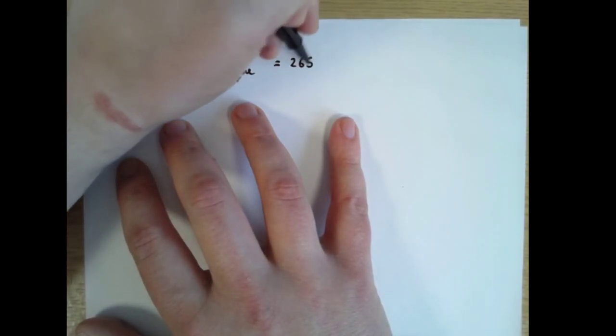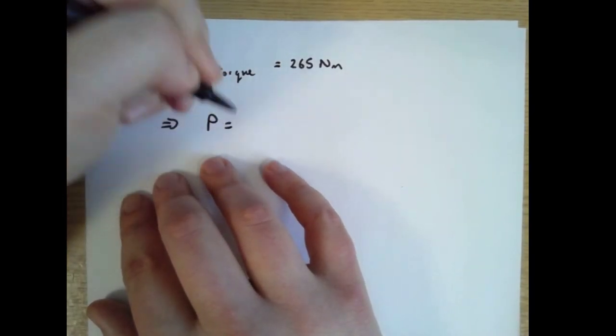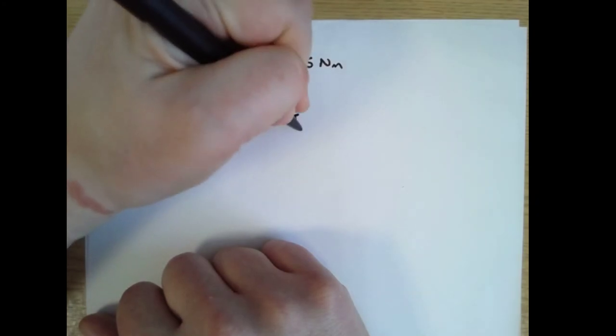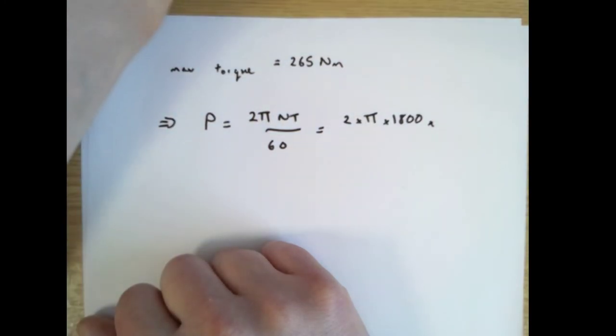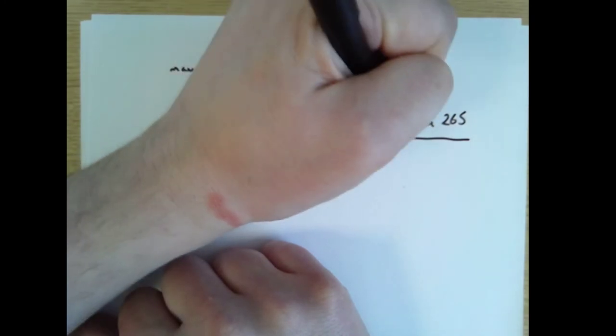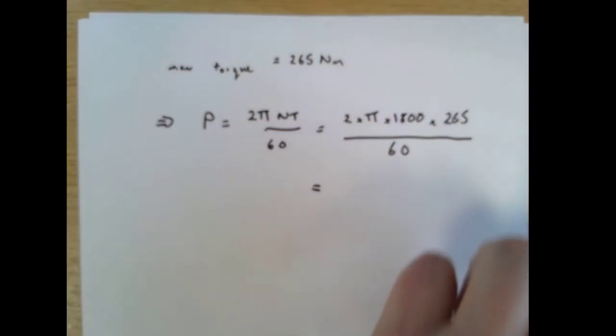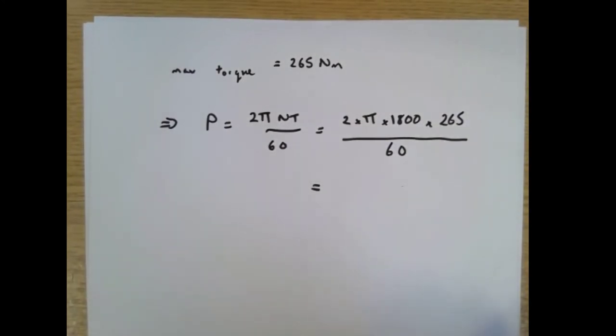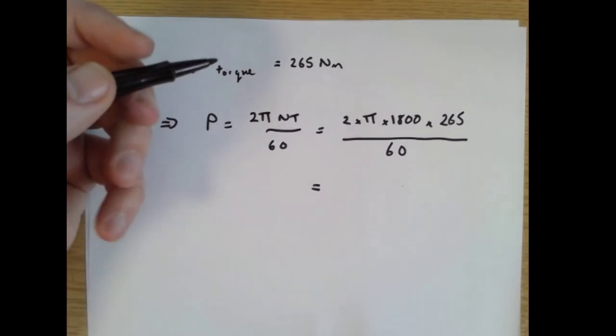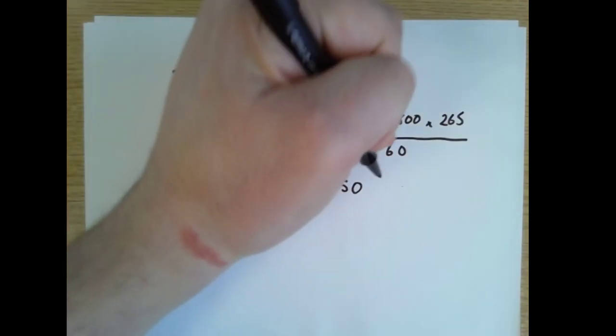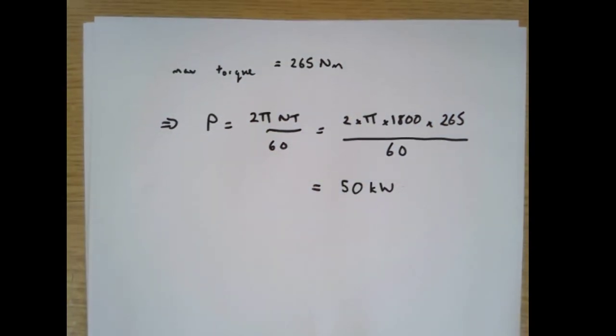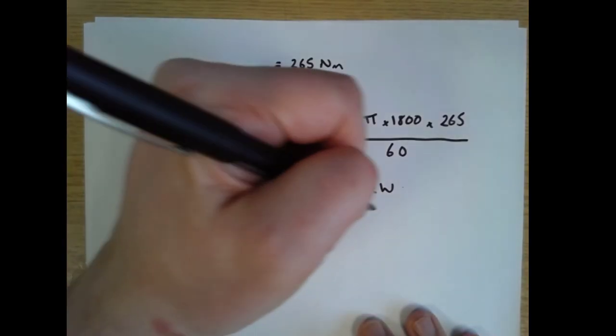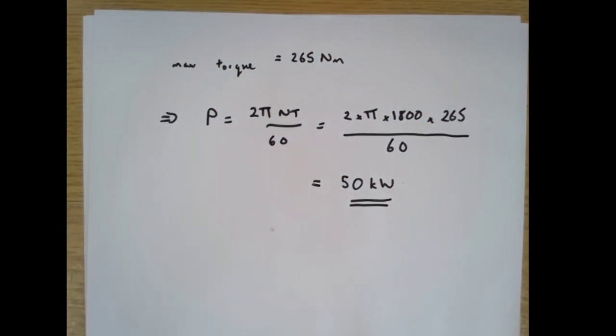And now we can put that into this formula for power. Power is 2 pi n t divided by 60, which equals 2 times pi times 1800 times 265 divided by 60, which equals 49951, I'm going to call that 50,000 watts or 50 kilowatts. And that's the answer, that's the maximum power that can be transmitted by that shaft given those two conditions in the question.